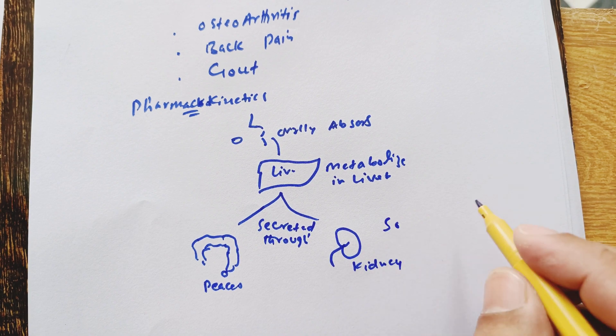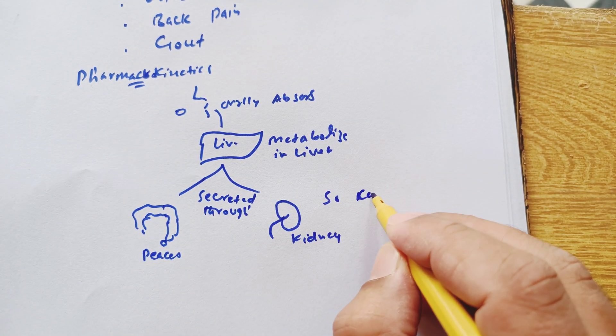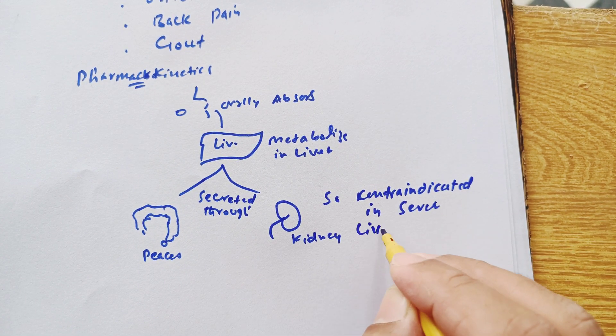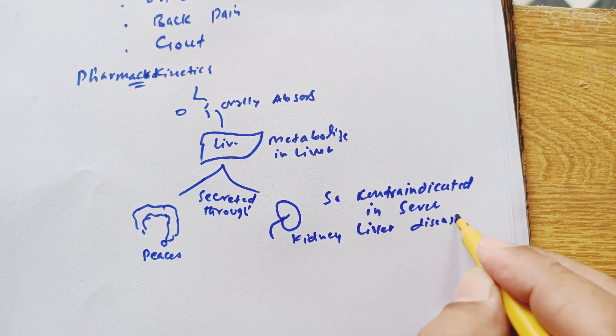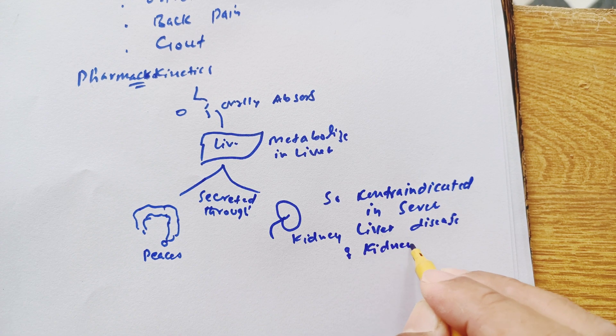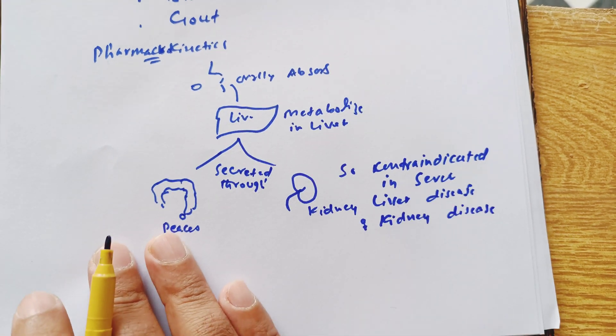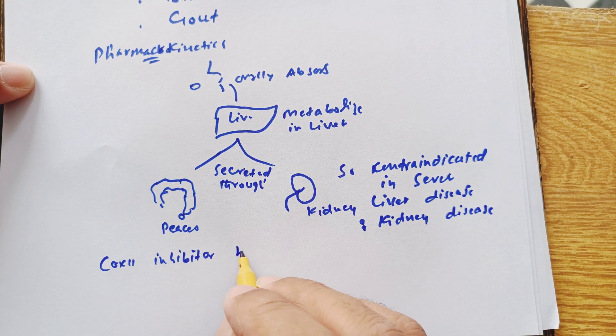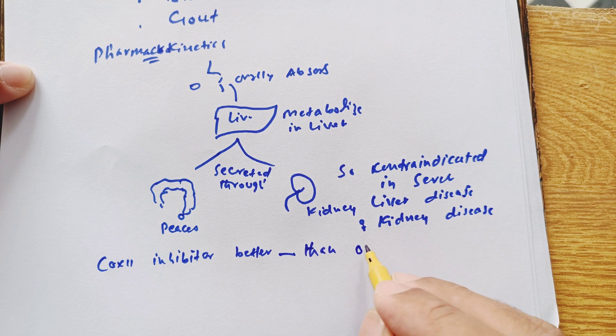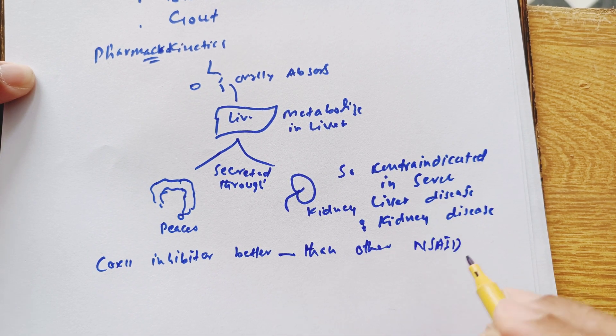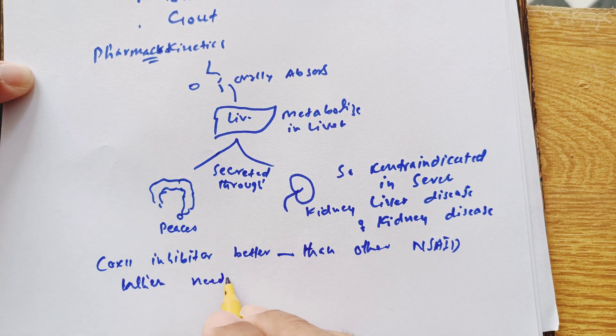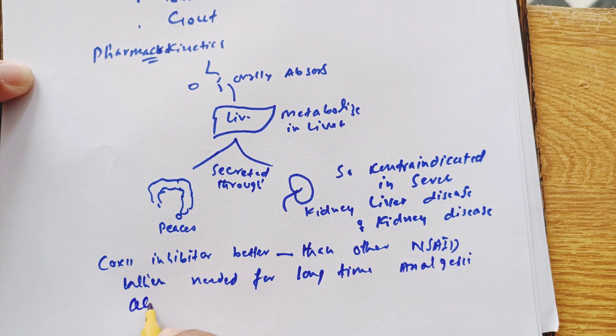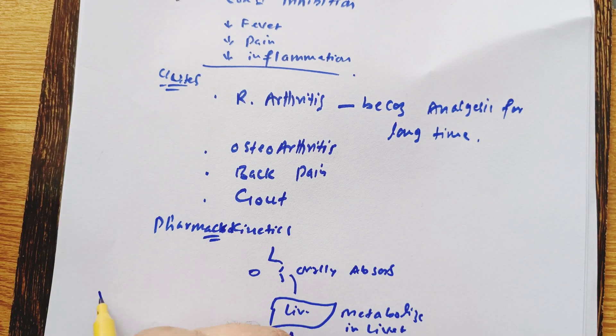So that's why these drugs are going to be contraindicated in severe liver disease and severe kidney disease. These drugs, selective COX-2 inhibitors, are better than other analgesics when we need the analgesic activity for a long time like rheumatoid arthritis.